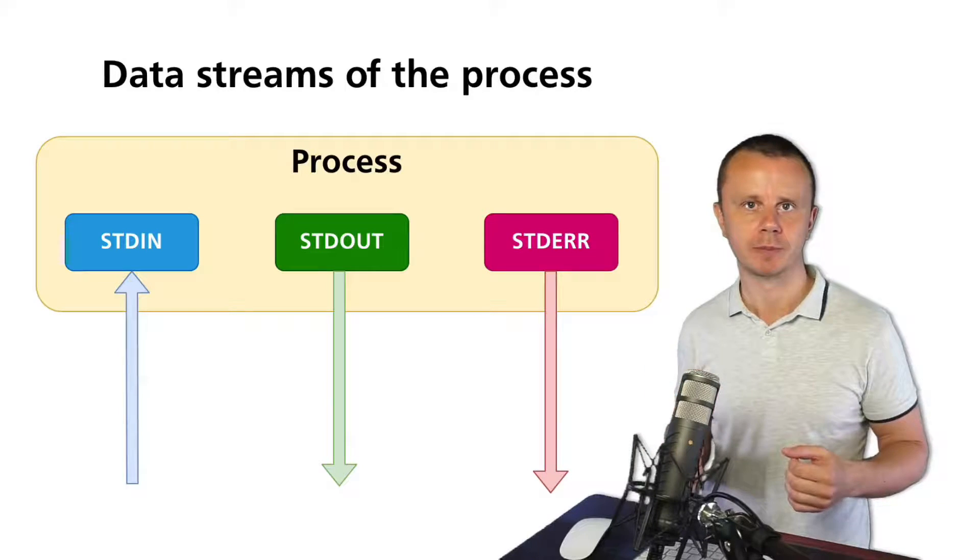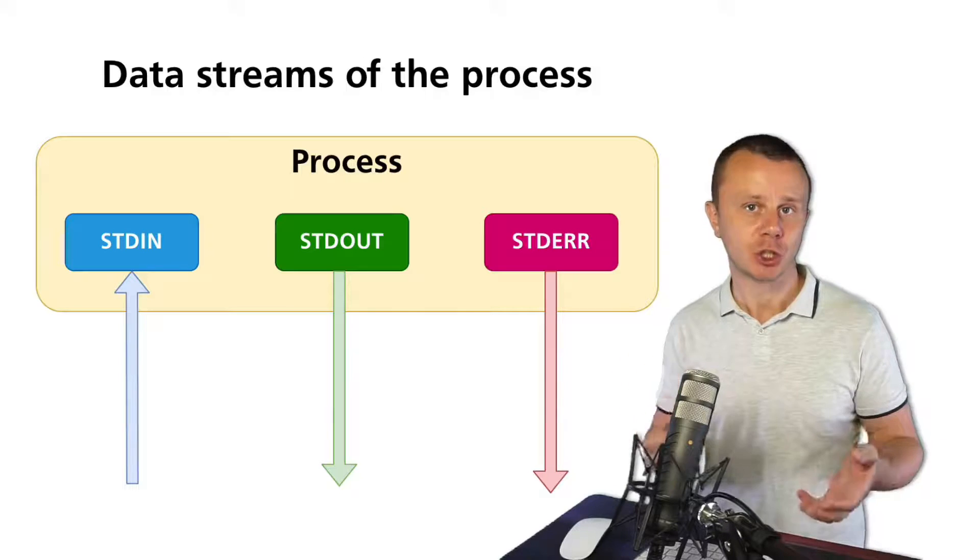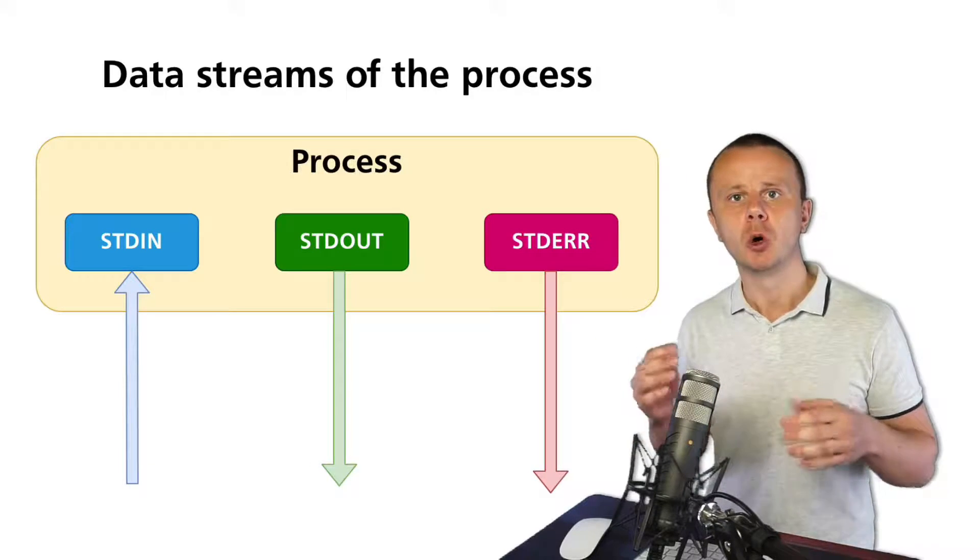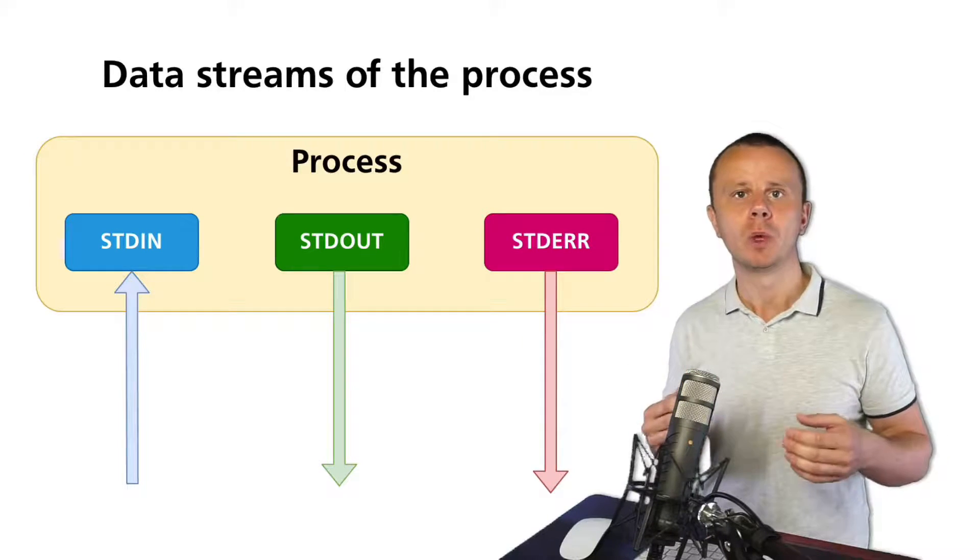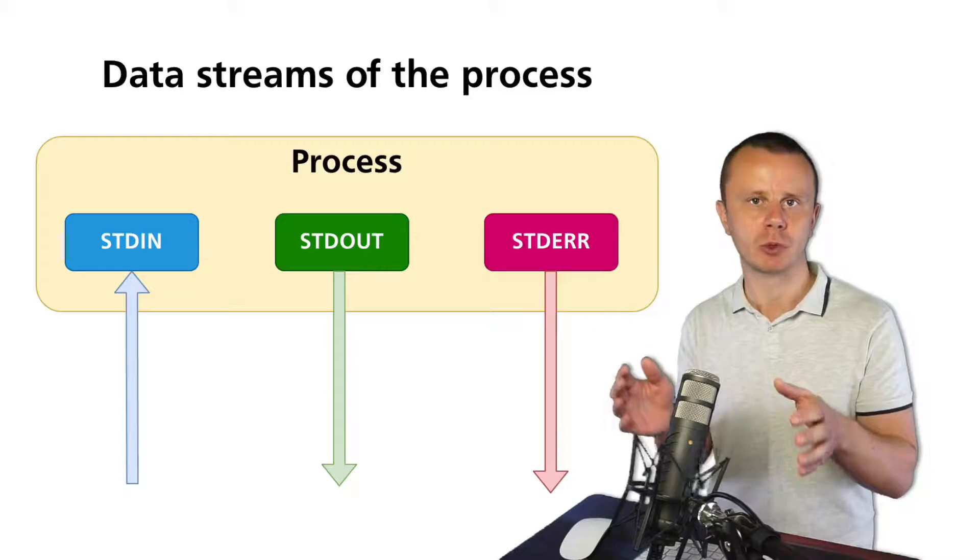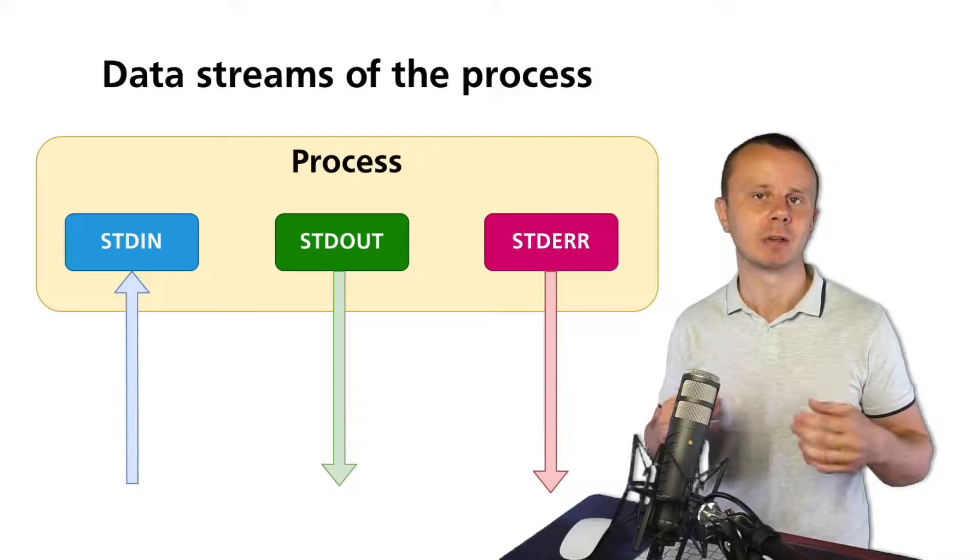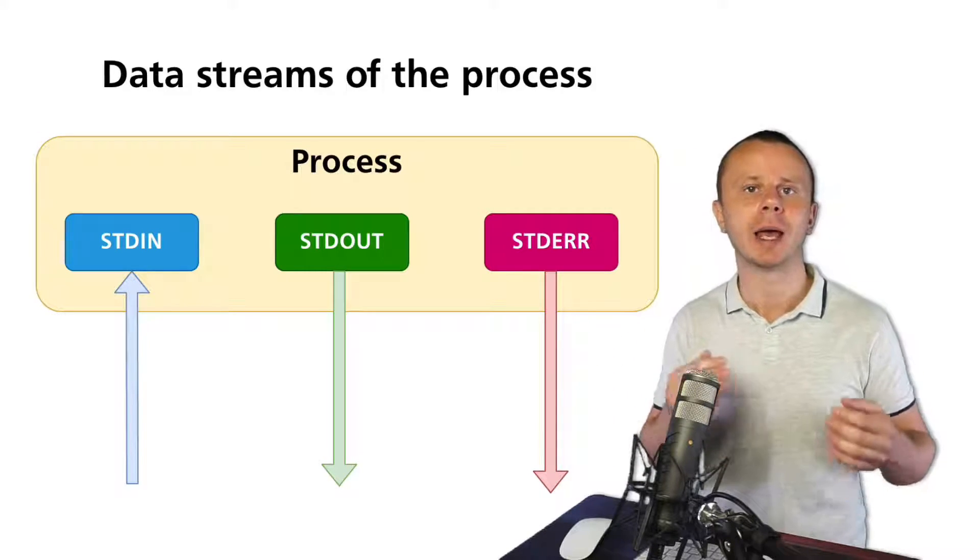By default, when you start a specific process inside of the shell like zsh shell or bash shell or ksh, those outgoing flows stdout and stderr will be shown directly on your screen. But you are able to redirect those data flows to files, and you could even use different files for stdout and stderr.